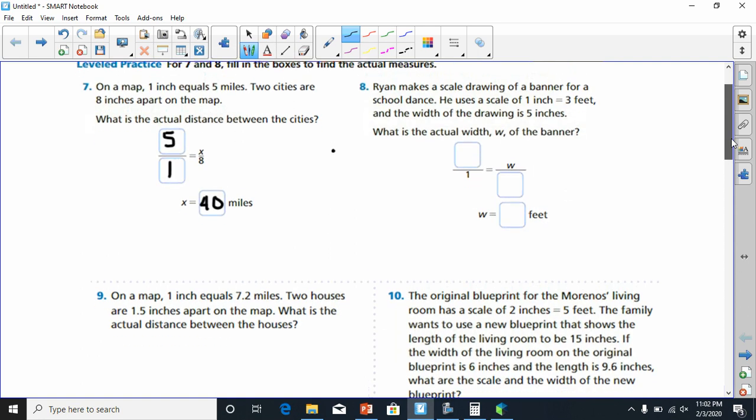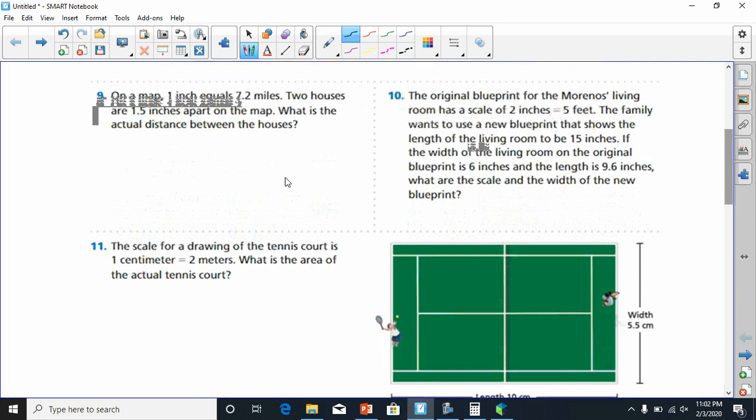Going on to, you guys got number 8. I'm doing number 9. On a map, 1 inch equals 7.2 miles. Two houses are 1.5 apart in inches. Once again, since the inches are on the bottom, we'll put 1.5 over here. I'm just going to label this so we know what this is inches. And on top, this is miles. And we're looking for how many miles this is.